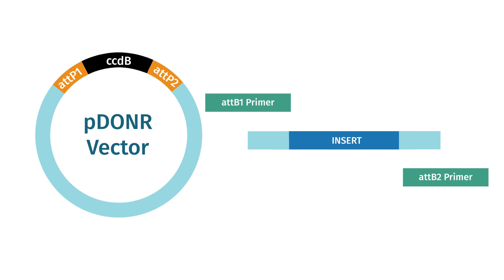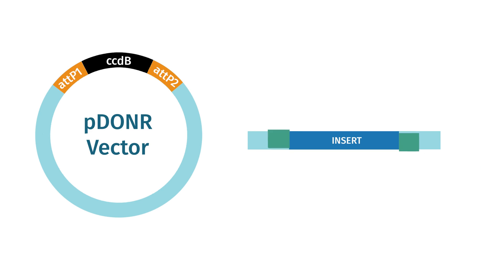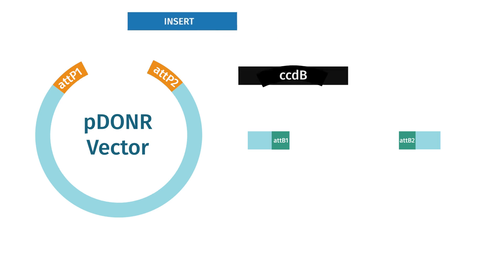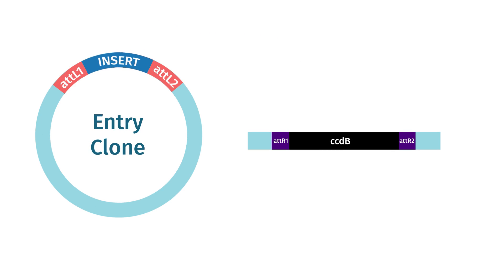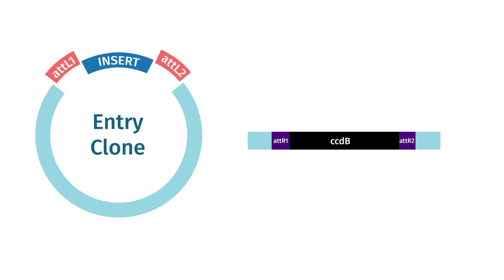Add the required AT-B1 and AT-B2 sites to your fragment of interest using PCR primers. After PCR amplification and cleanup, the fragment of interest is introduced into a donor vector using BP clonase. The result is the fragment of interest now flanked by AT-L sites.